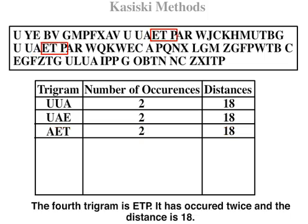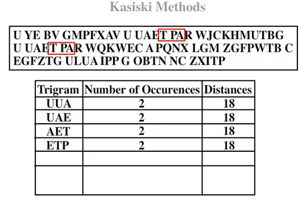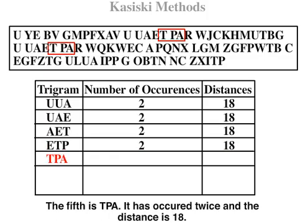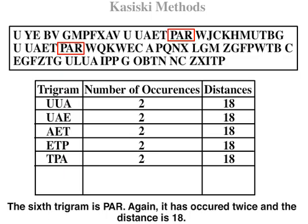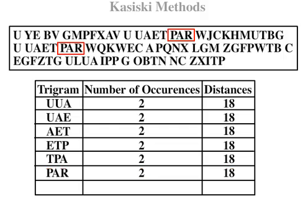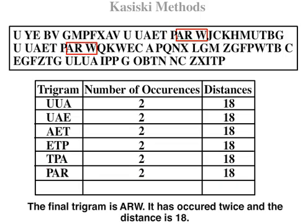The fourth trigram is T-P-A; it has occurred twice and the distance is 18. The sixth trigram is T-P-A-R; again, it has occurred twice and the distance is 18. The final trigram is A-R-W; it has occurred twice and the distance is 18.